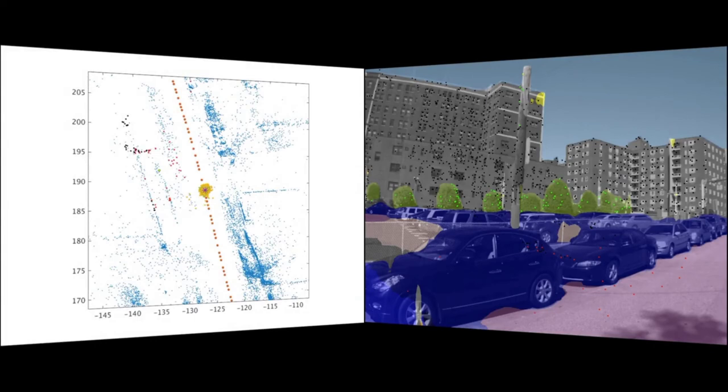Now, each particle, here shown in yellow in the figure to the left, describes one possible pose of our vehicle, or actually a whole vehicle trajectory, but let's not focus on that right now.